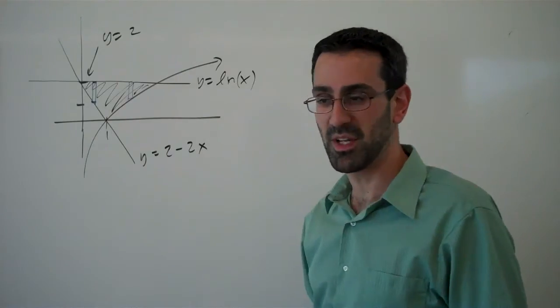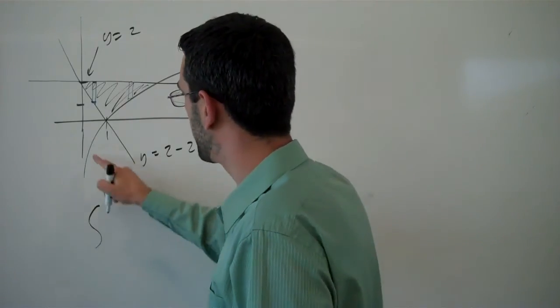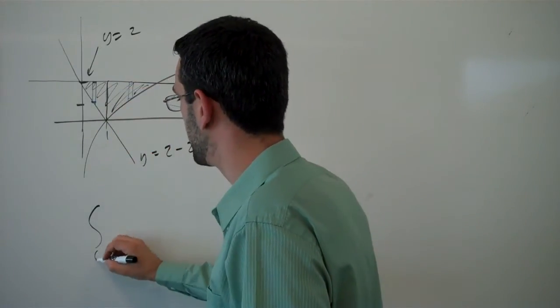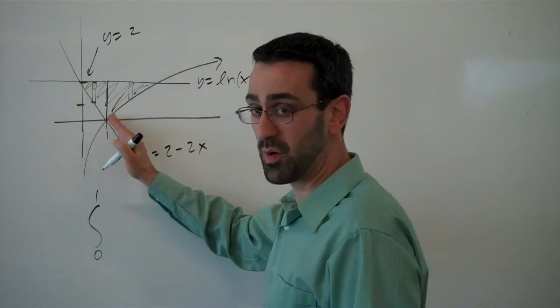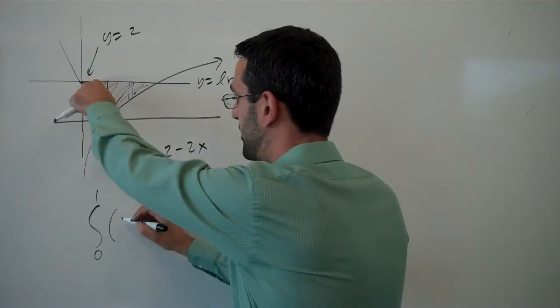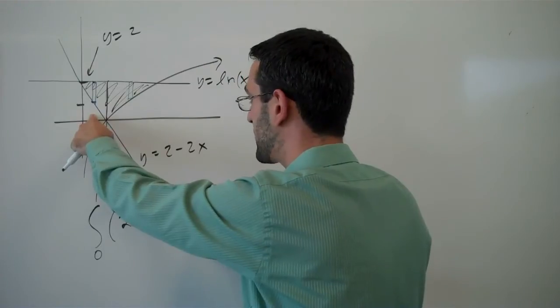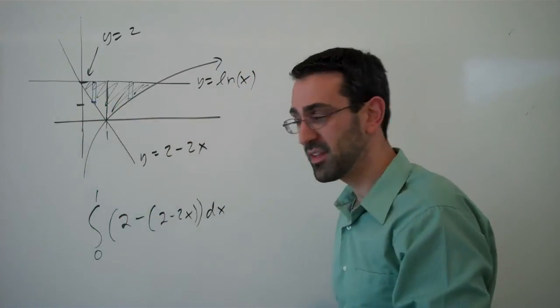And just so we can see that that can be done, let's go ahead and do it. So for the first part here, up to here, we'd be integrating from 0 to 1. On the top we have the function 2. On the bottom we have the function 2 minus 2x. A little tiny width.